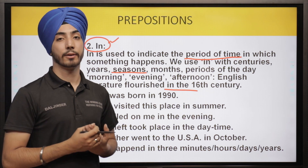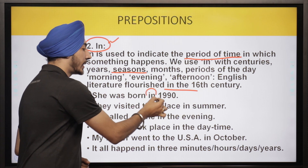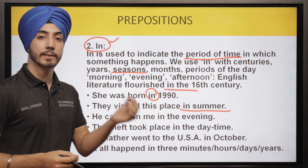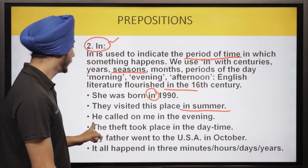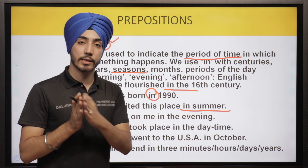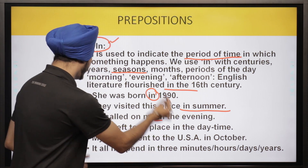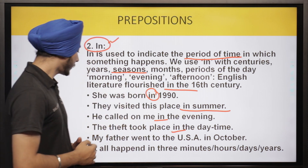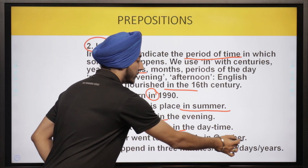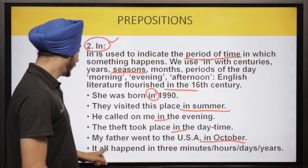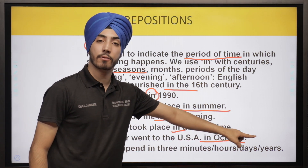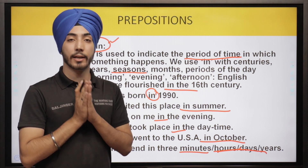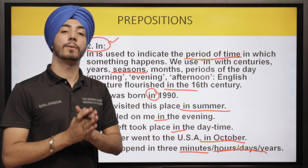'She was born in 1990' — 1990 is a complete time period of one year. 'They visited this place in summer' — summer is a few months' period, not a specific time event. 'He called on me in the evening' — evening is also a time duration. 'The theft took place in the day time.' 'My father went to the USA in October' — October is a 31-day period. 'It all happened in three minutes, three hours, three days, or three years' — with minutes, hours, days, and years we always use 'in.'